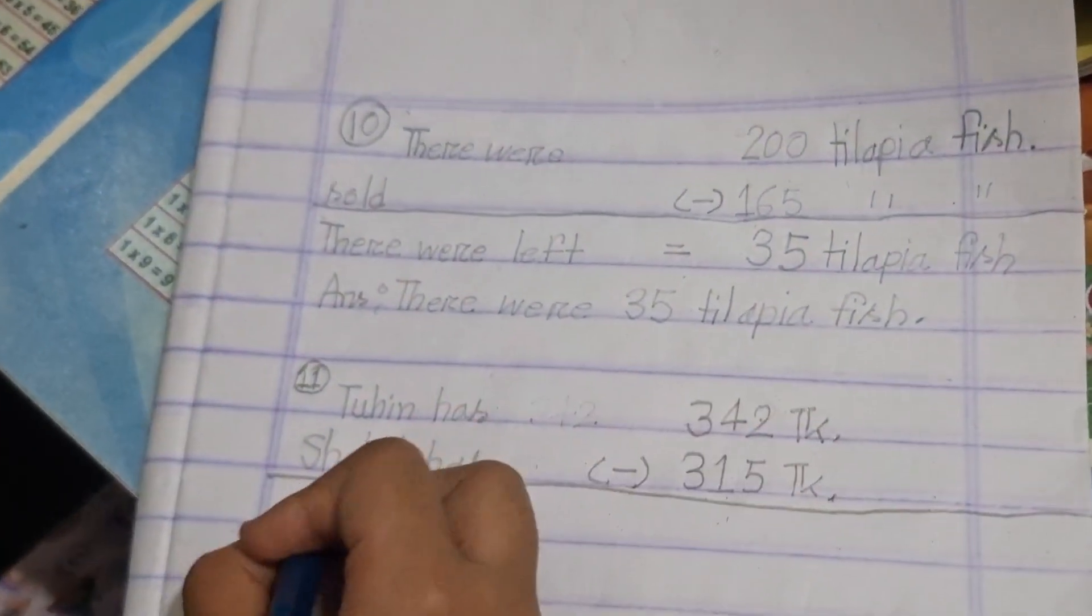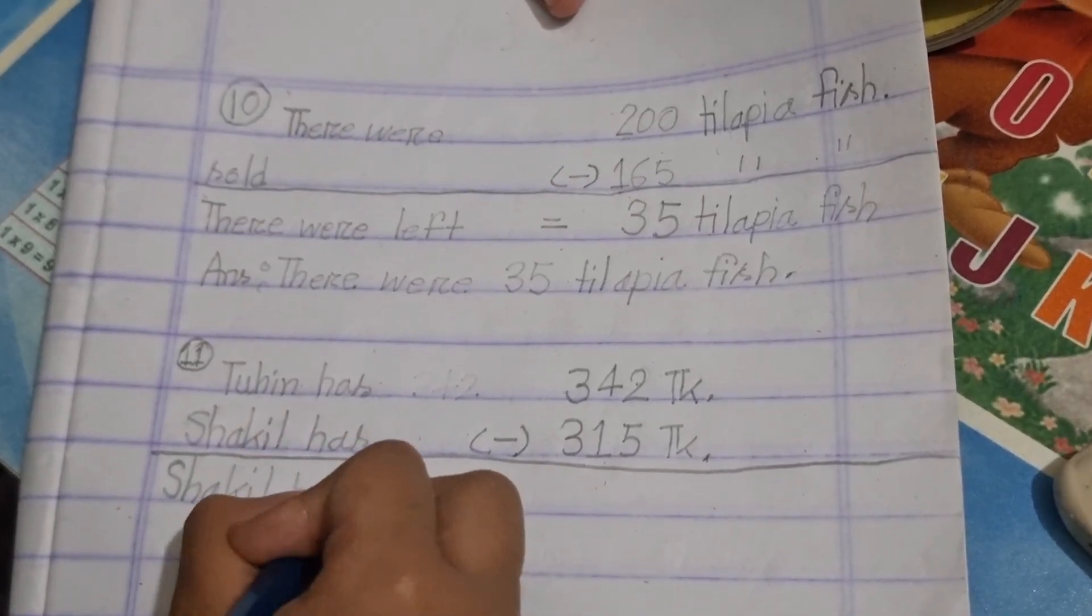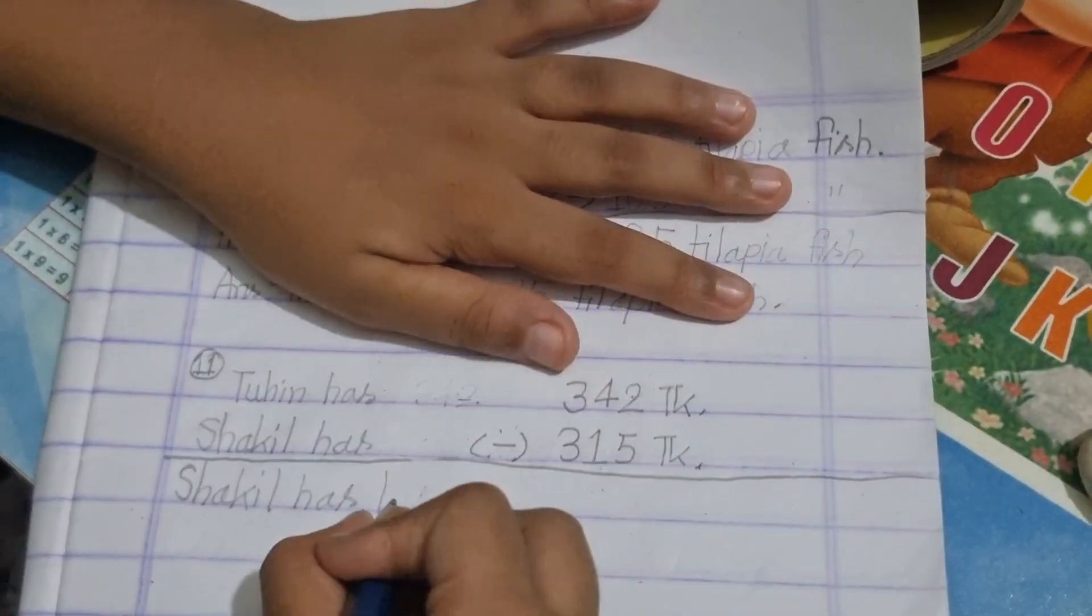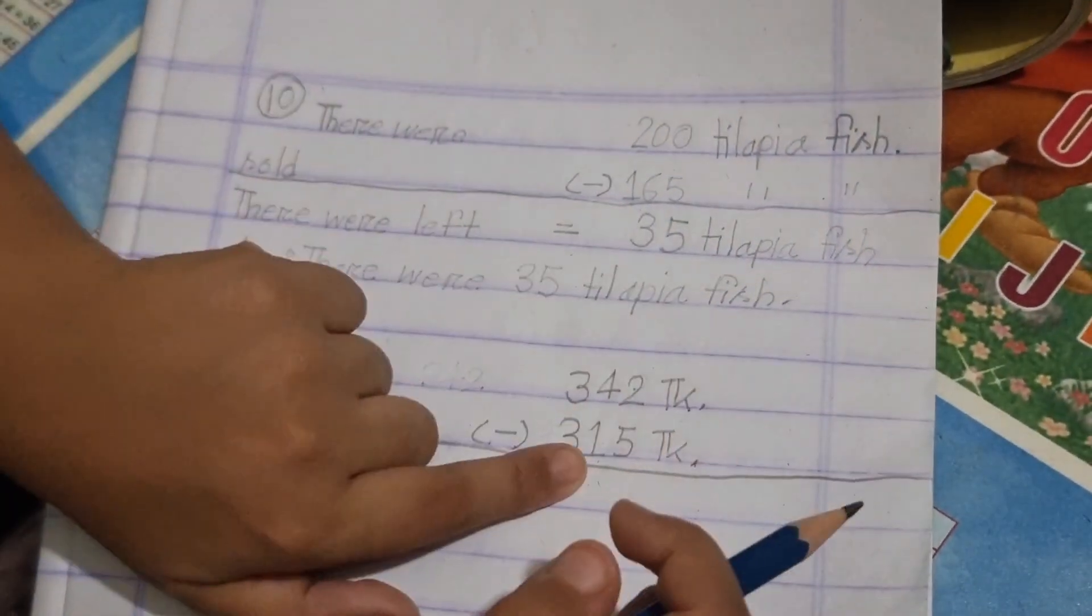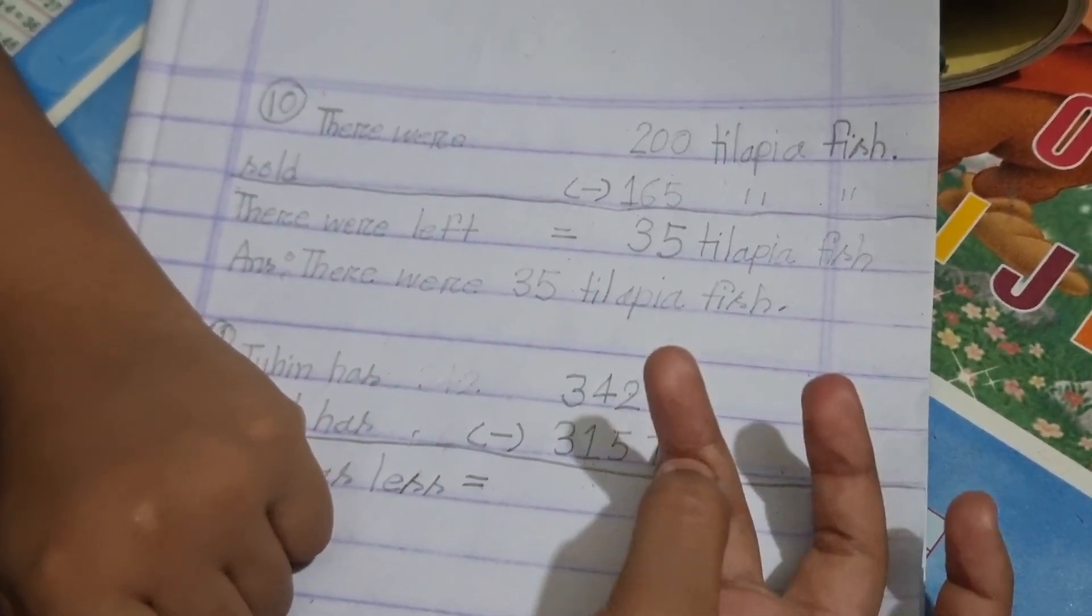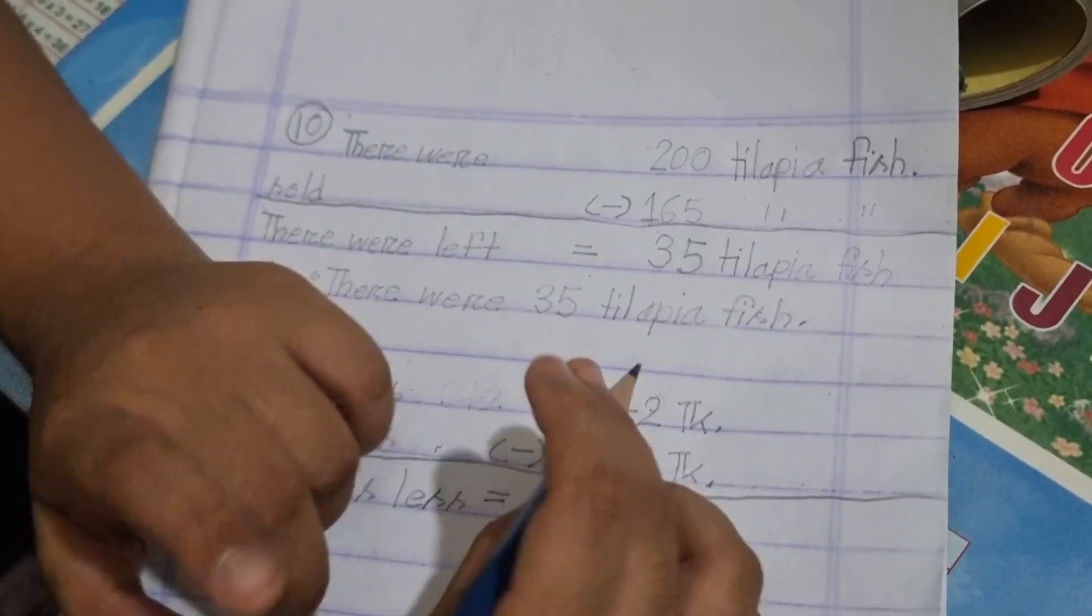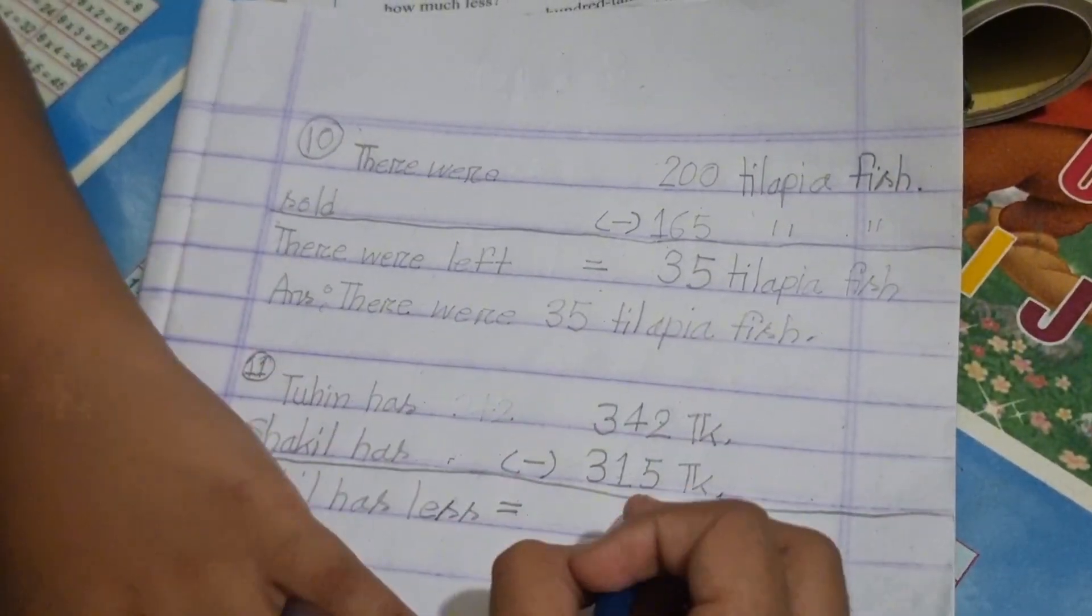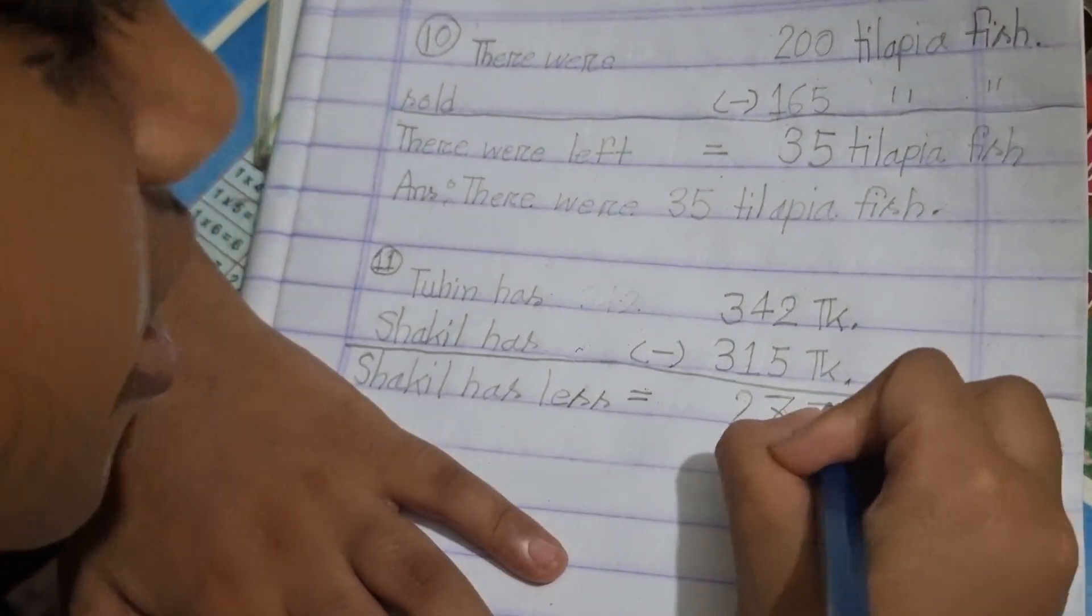Shaqeel has less, how much? Let me calculate: 5, we need to borrow, so 12 minus 5 is 7. Then 4 minus 1 is 3, and 3 minus 3 is 0.